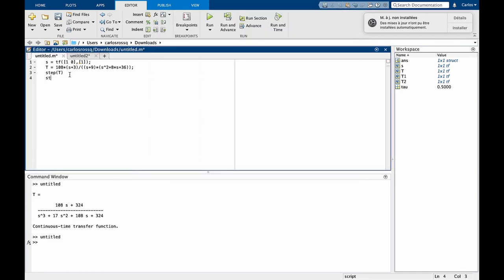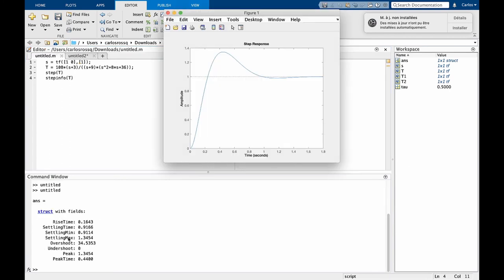If you type step info of T, you can also get in the command line here all the properties of the step response of the system, such as the rise time, settling time, and overshoot.